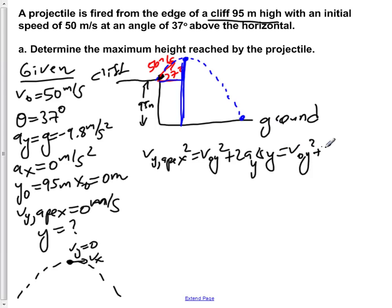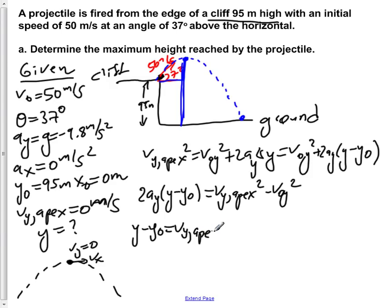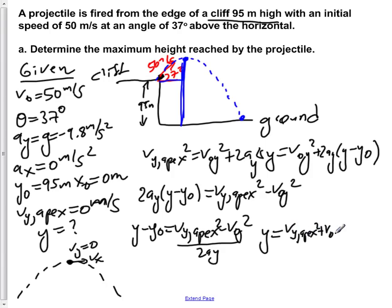We know that Δy has the form y minus y₀. Since we know y₀, we just solve for y. Subtracting Vy² from both sides gives 2·Ay·(y − y₀) = Vy_apex² − Vy². Dividing both sides by 2·Ay gives y − y₀ = (Vy_apex² − Vy²) / (2·Ay). Adding y₀ to both sides gives y = (Vy_apex² − Vy²) / (2·Ay) + y₀.